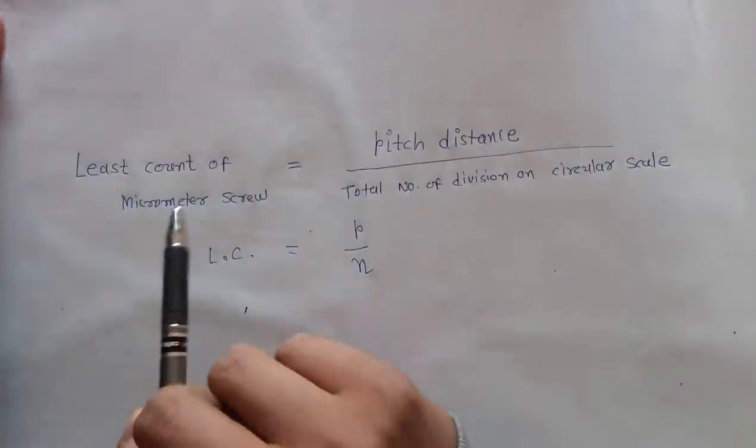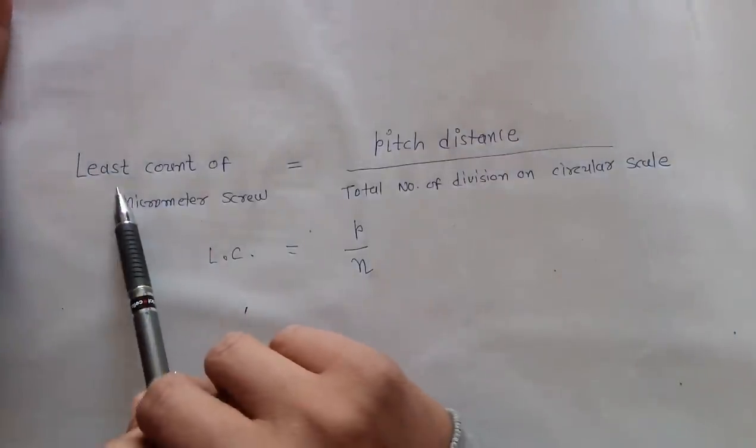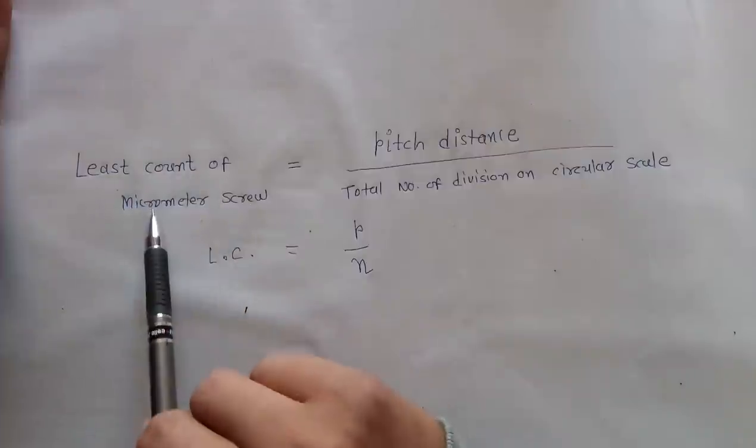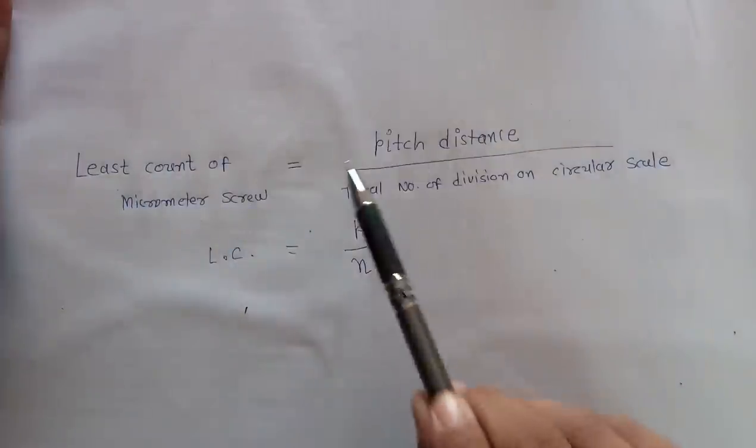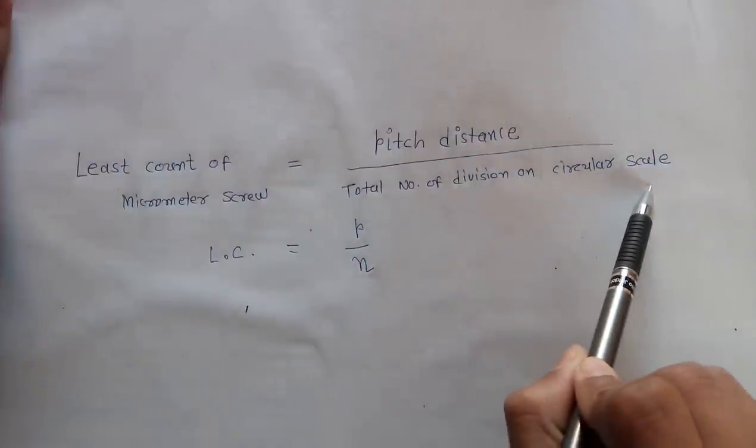Hello, good morning friend. Today we will learn about how to calculate least count of micrometer screw. This is the formula: pitch distance divided by total number of division on circular scale.